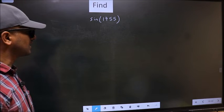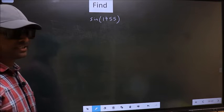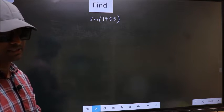Find sin 17 double 5. To find this, we should follow this method. See.